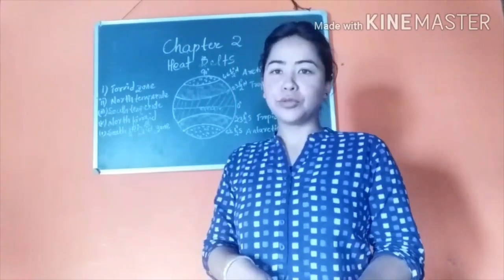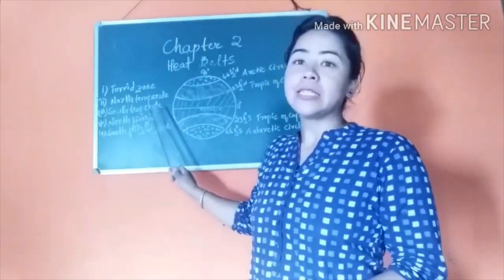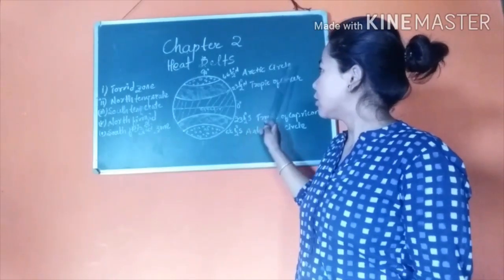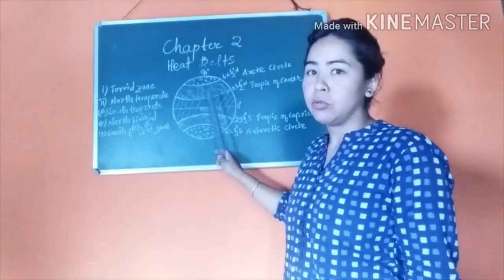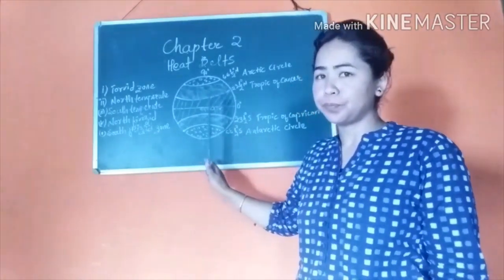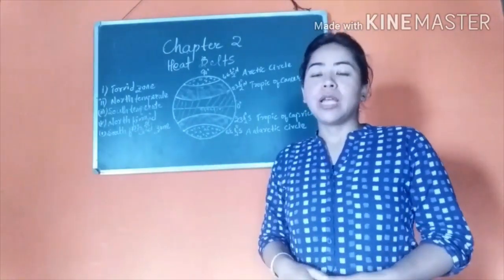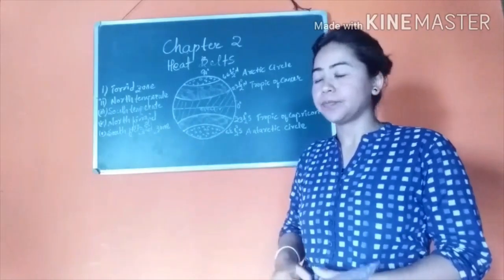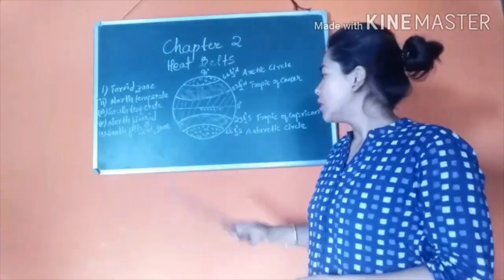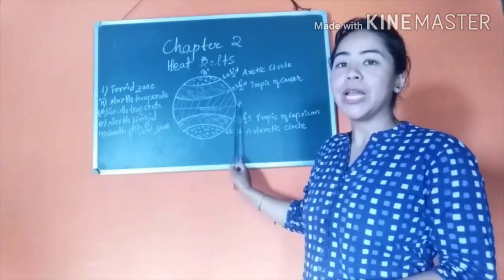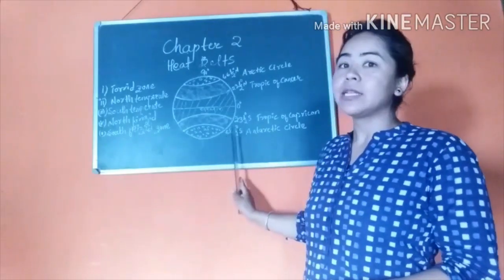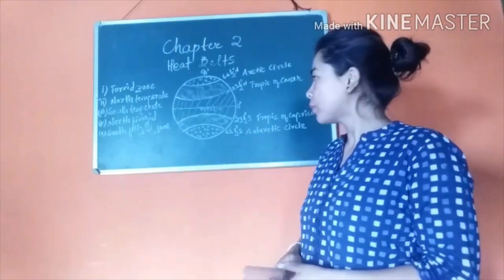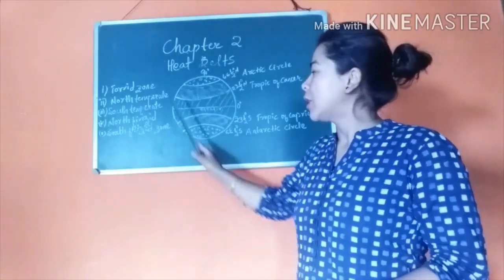Next are the temperate zones. We have two: the north temperate zone and the south temperate zone. The north temperate zone lies between the Tropic of Cancer (22.5° North) and the Arctic Circle (66.5° North). The north temperate zone has a pleasant and moderate temperature as it lies far from the equator. The south temperate zone lies between the Tropic of Capricorn (22.5° South) and the Antarctic Circle (66.5° South). The shaded portions on the map show both temperate zones.